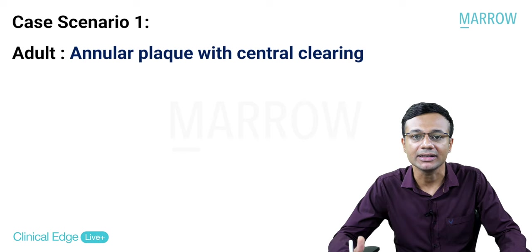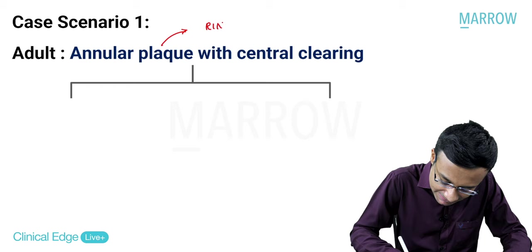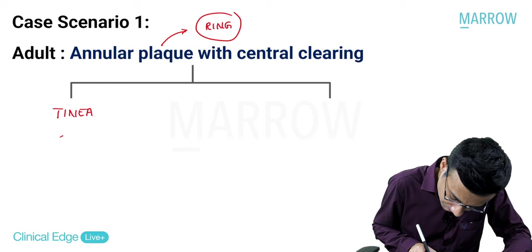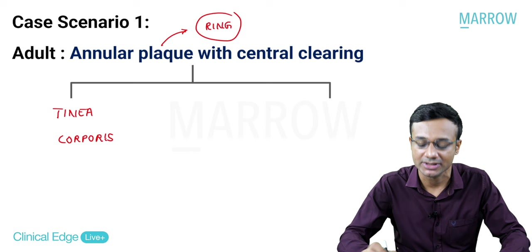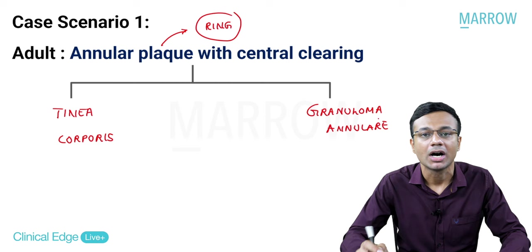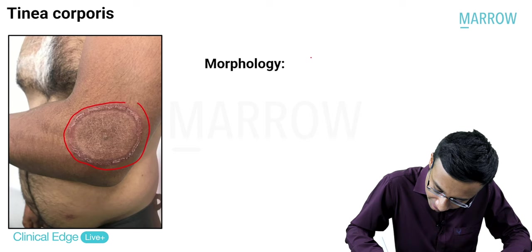Case scenario number one: an adult presenting with an annular plaque with central clearing. In dermatology, annular means a ring-shaped lesion which is generally active in its periphery. Two important differential diagnoses to consider: number one, tinea corporis; number two, granuloma annulare. How do we distinguish these two conditions in the exam? When we look at tinea, the border of this lesion is scaly - you get a scaly, well-defined margin.